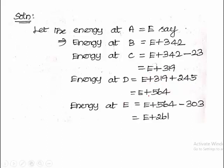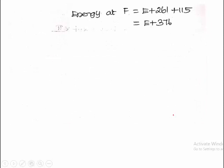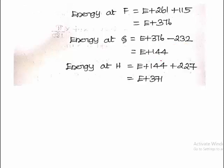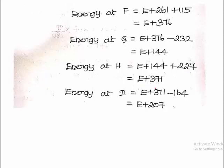Similarly at point E, from point D to E there is negative fluctuation, so minus 303, giving E plus 261. At point F, plus 115 gives E plus 376. At point G, minus 232 gives E plus 144. At point H, plus 227 gives E plus 371. At point I, minus 164 gives E plus 207.